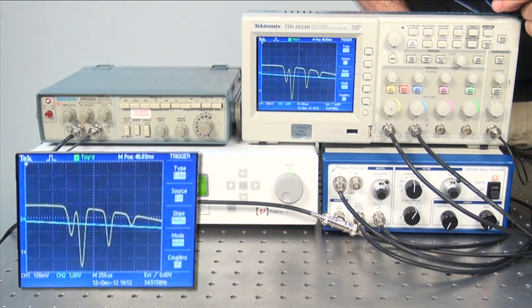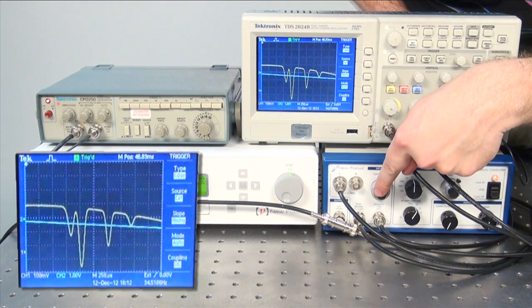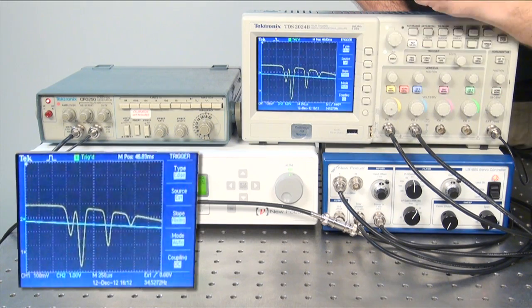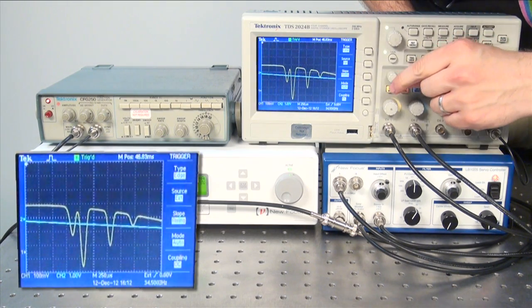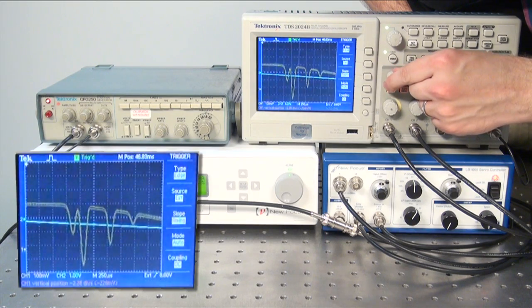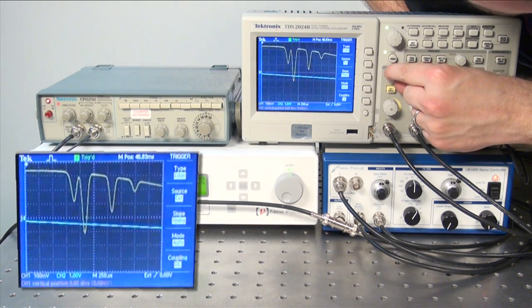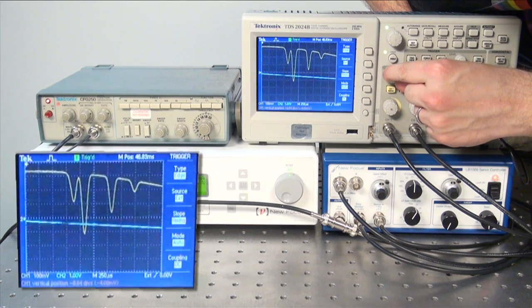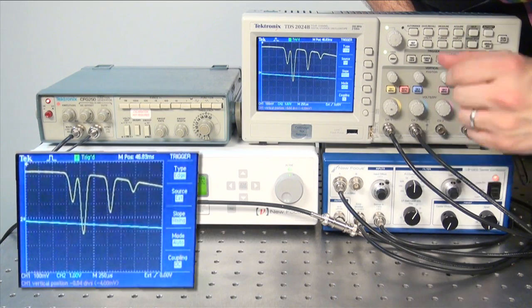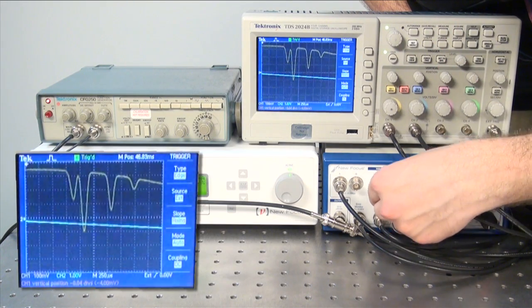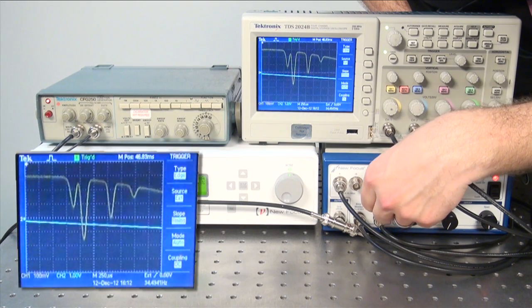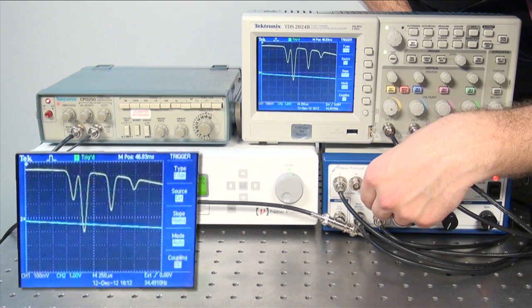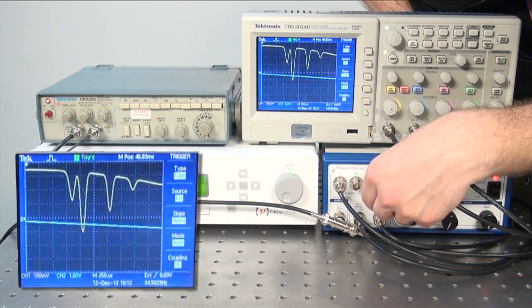Next, you will set the input offset so that the zero line is in the middle of the oscilloscope screen. First, raise or lower your signal so that the zero is in the middle of the screen, and then raise or lower your input offset so that just the sharpest absorption dip crosses that zero line.